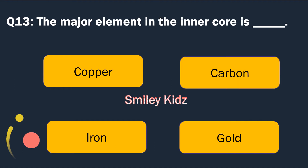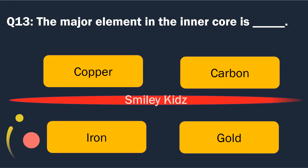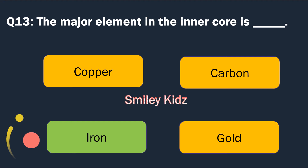Question number 13. The major element in the inner core is. Options are: Copper, Carbon, Iron and Gold. The right answer is Iron. The major element in the inner core is Iron.